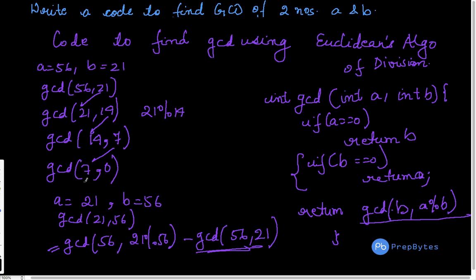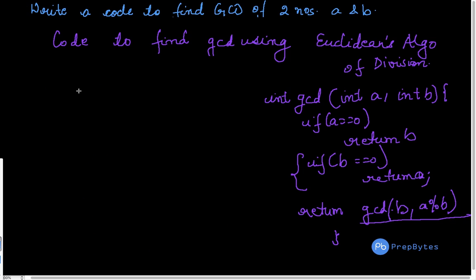Now if we talk about the time complexity, let's see what is the time complexity for this. The time complexity of this is going to be O of log of N, where N could be maximum of A or B. So that was about finding GCD using various approaches.